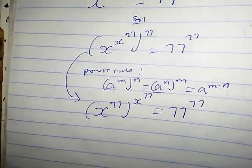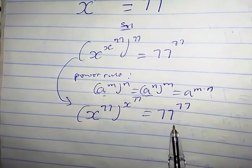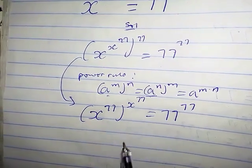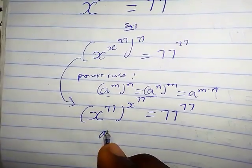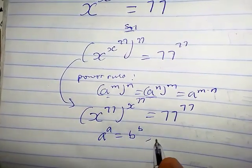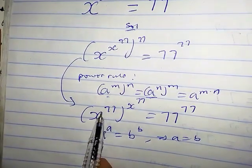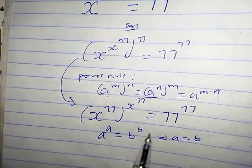You will observe that the base is the same thing as the exponent, likewise on the right-hand side. So that is from this property. Whenever we have a raised by a equals to b raised by b, this implies that a equals to b. So now a is x raised by 77, and b is 77.